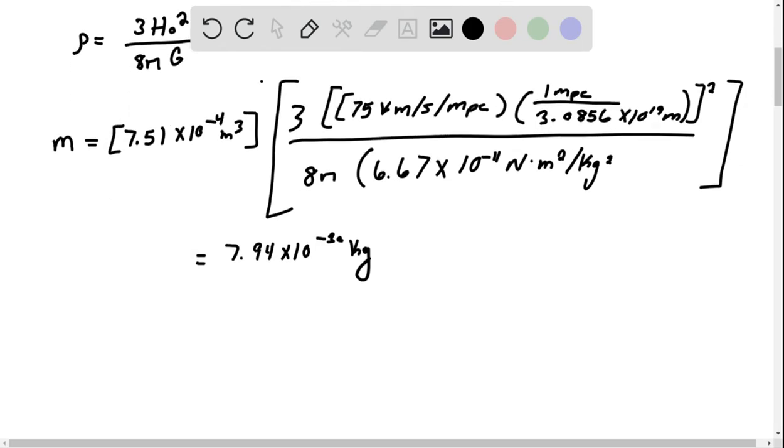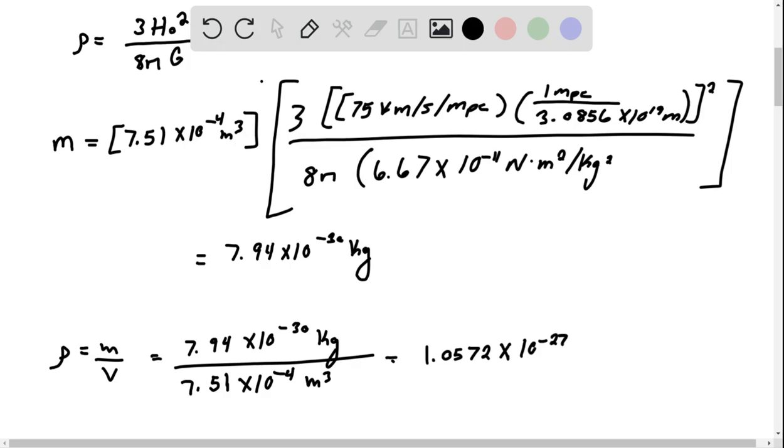So now we have density equals mass over volume, and we get 7.94 times 10 to the negative 30 kilograms divided by 7.51 times 10 to the negative 4 m cubed, which equals 1.0574 times 10 to the negative 27 kilograms per meter cubed.